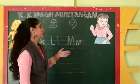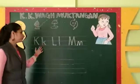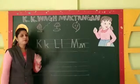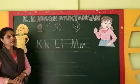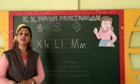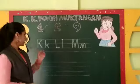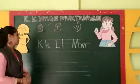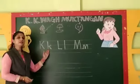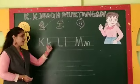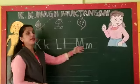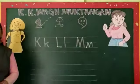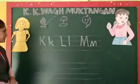Today I am going to teach you combined alphabets. Previously we have learnt A to J. So today we have learnt K, L and M. Ok children? So shall we start?